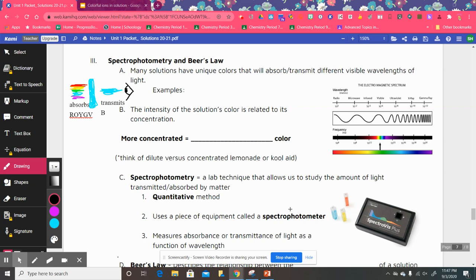We know that many solutions have unique colors that will absorb or transmit different wavelengths of visible light. We see that with our copper sulfate solution. Copper ions have a unique blue color.